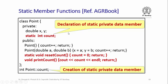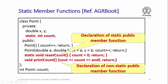I could also declare static data members as private. Here I have declared the same integer counter as static but in the private section, and I create it outside any function, initializing it similarly. I have also introduced a static member function named reset_count in the public section, which simply resets the counter to zero. A static member function is not associated with any individual object of class Point; it is shared across all objects of the class.